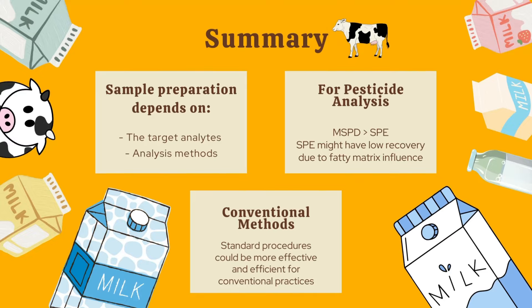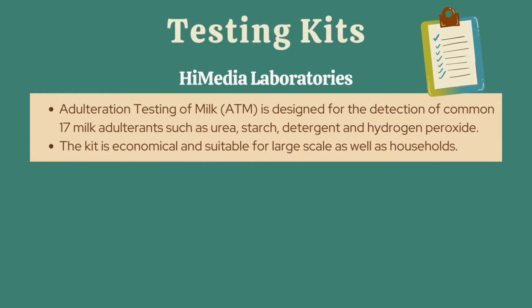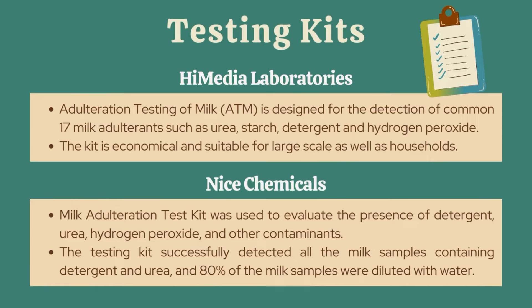Moving on to the sample analysis method. A standard milk adulteration kit from Hi-Media Laboratories was used to detect 17 different adulterants in milk, such as urea, starch, detergent, and hydrogen peroxide. The kit is economical and suitable for large-scale field and household use. Another case study used a milk adulteration test kit from NICE Chemicals to evaluate detergent, urea, hydrogen peroxide, and other contaminants. The testing kit successfully detected all milk samples containing detergent and urea, and 80% of the milk samples were found to be diluted with water.